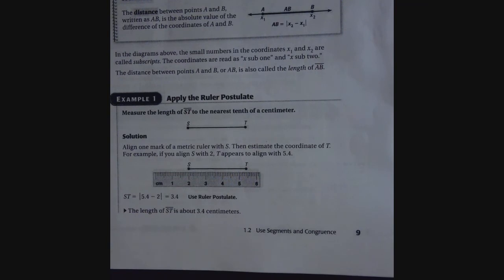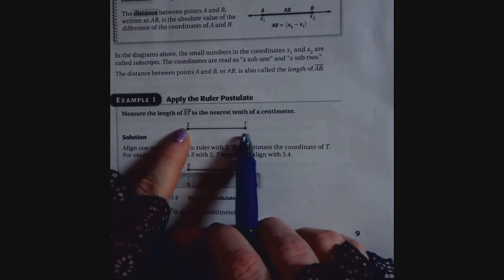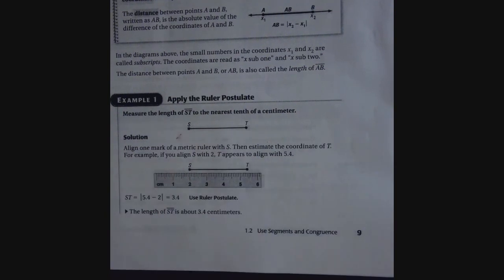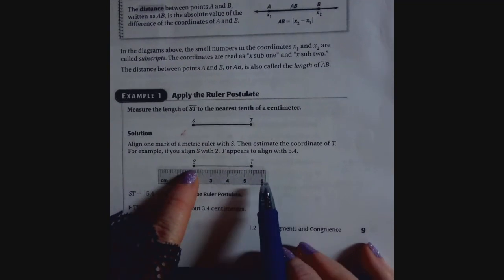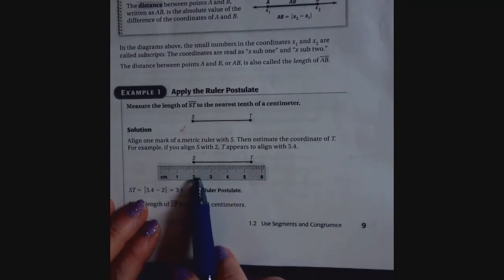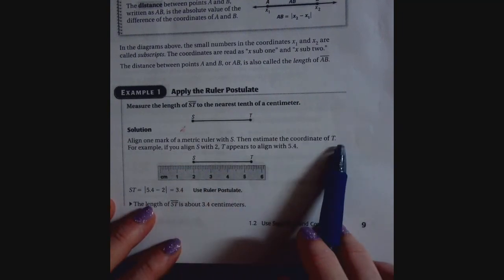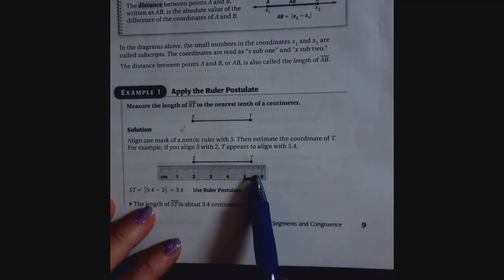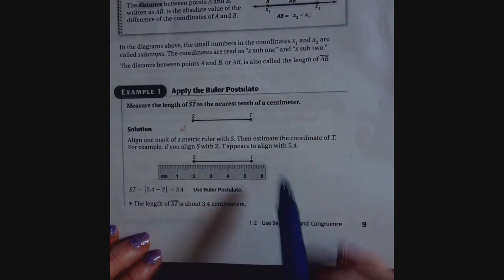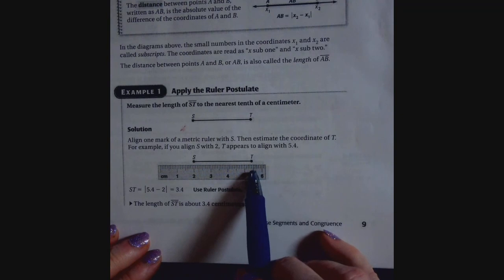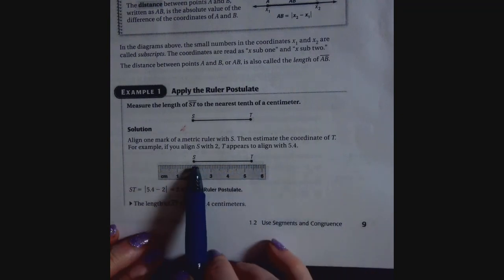So apply the ruler postulate. We're going to measure the length of ST to the nearest tenth of a centimeter. So they ask you to do that. You've got a ruler. So align one mark of a metric ruler with S. So they went ahead and put S at 2. So you want to start at a whole number for sure. Then estimate the coordinate of T. So they put T here. You can see it's not at a whole number, it's some decimal. And then you align them, and you find that here this is about 5.4 when they counted through, and S is at 2.